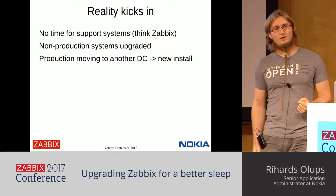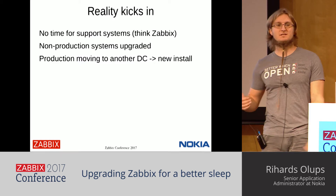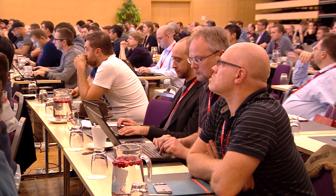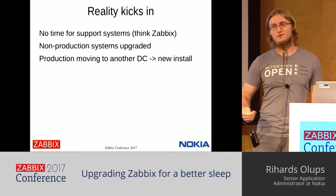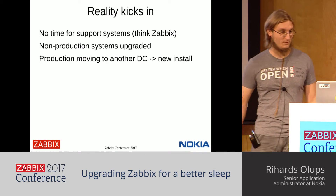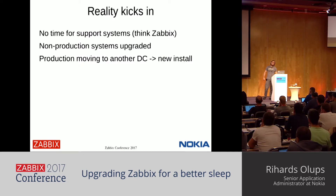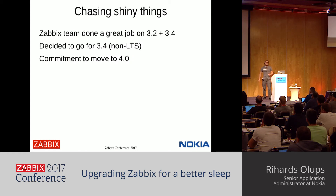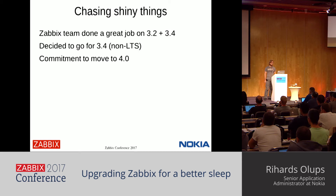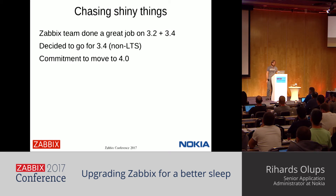One of our biggest production environments is supposed to move to a new data center, which involves setting most things up from scratch including Zabbix. So we decided to match the upgrade with this data center move. During this time we noticed that Zabbix did a really great job on features in 3.2 and 3.4, so we decided to go for 3.4 as well — even though that's a non-LTS version, meaning support will end around when 4.0 comes out. So we'll have a commitment to upgrade to 4.0 in the near future as well.